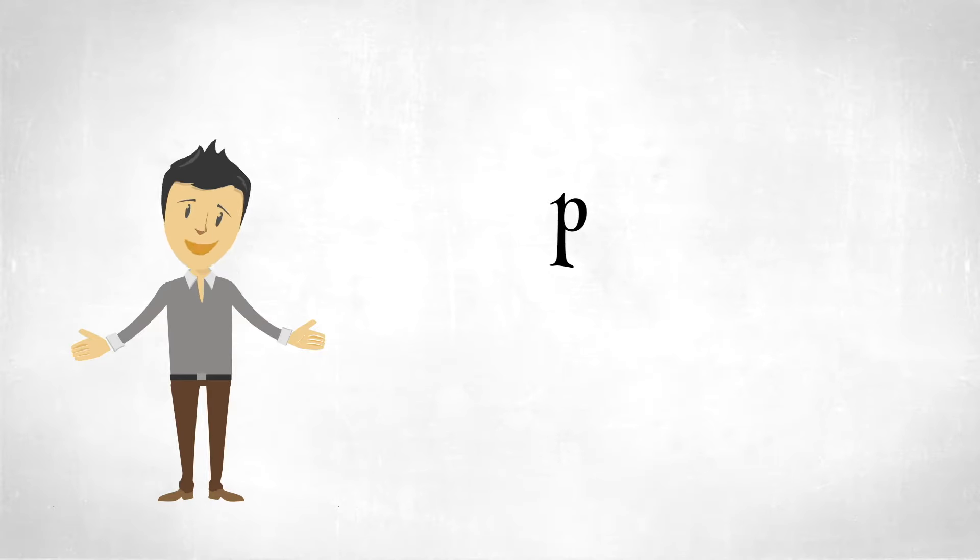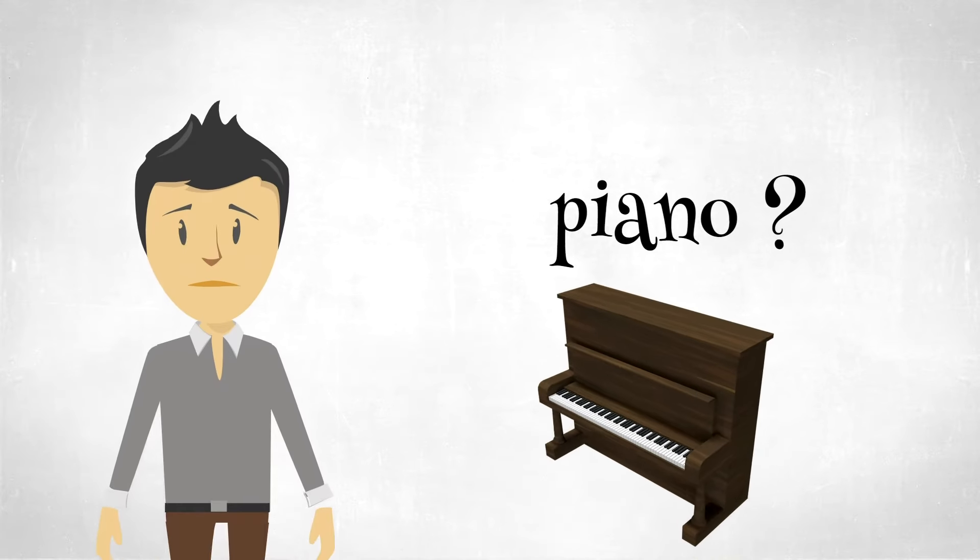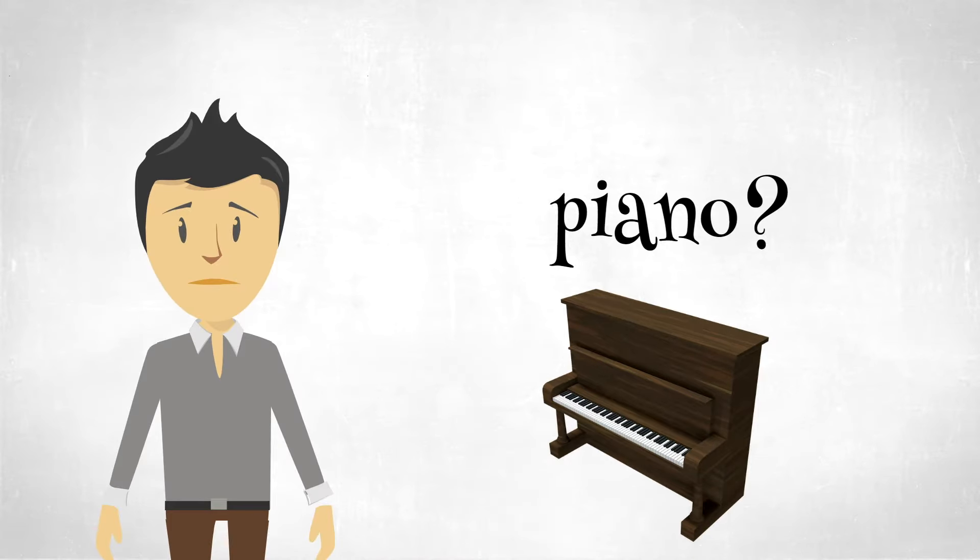Another dynamic symbol we see in music is the letter P. The letter P stands for the word piano. Piano? Wow! But the piano is an instrument we are learning. What does that have to do with loud and soft?